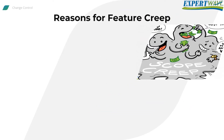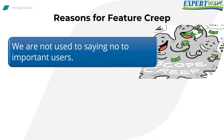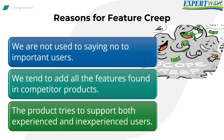Feature creep happens for three reasons. One: we're not used to saying no to important users, so all user demands end up in the product. Two: we tend to add all the features found in competitor products — I fell for this trap myself in my early years and ended up releasing the product very late. Three: the product tries to support both experienced and inexperienced users, so we may end up with two ways to implement the same functionality.